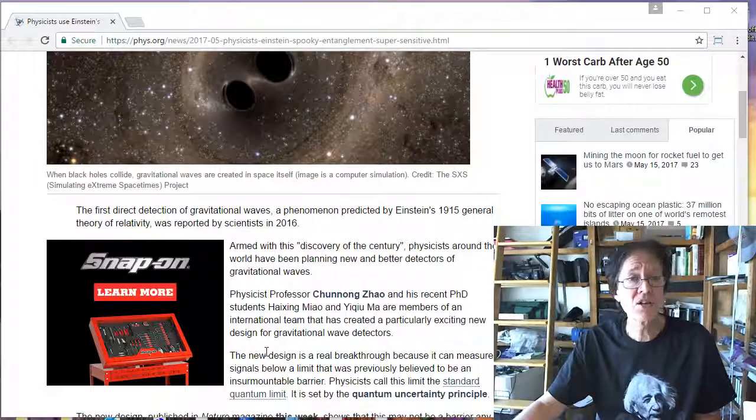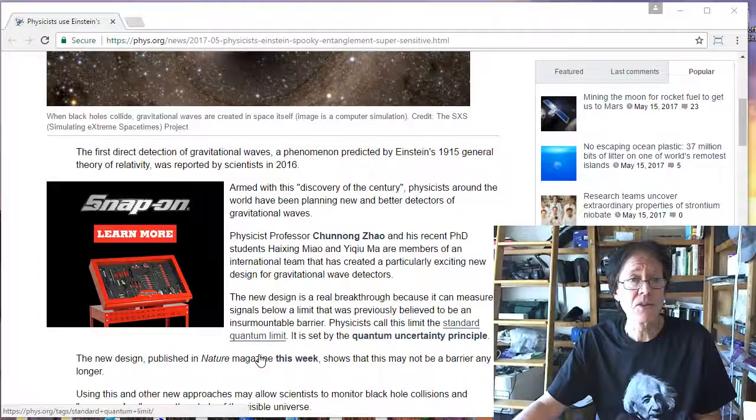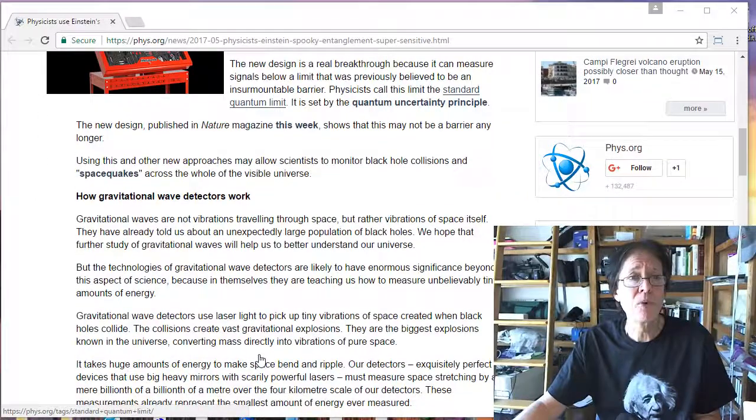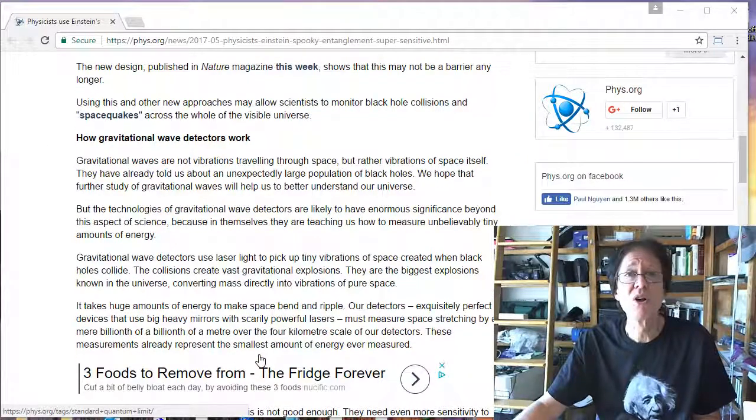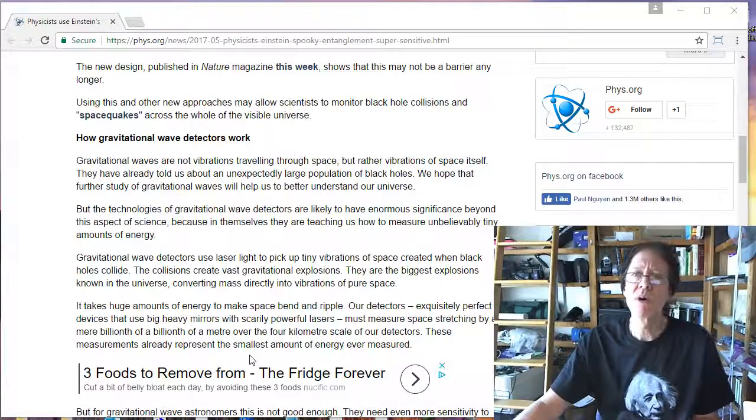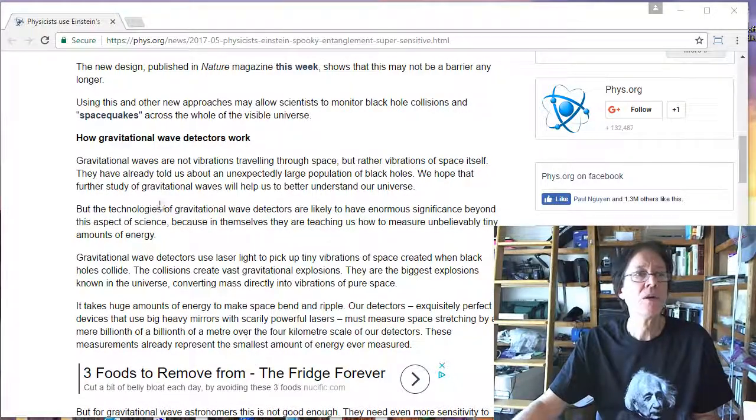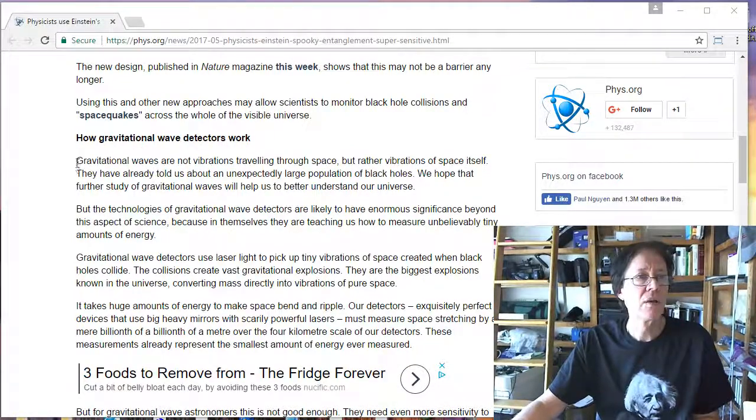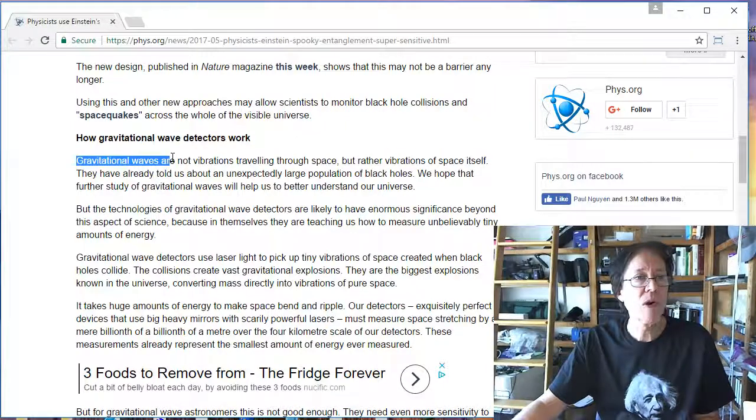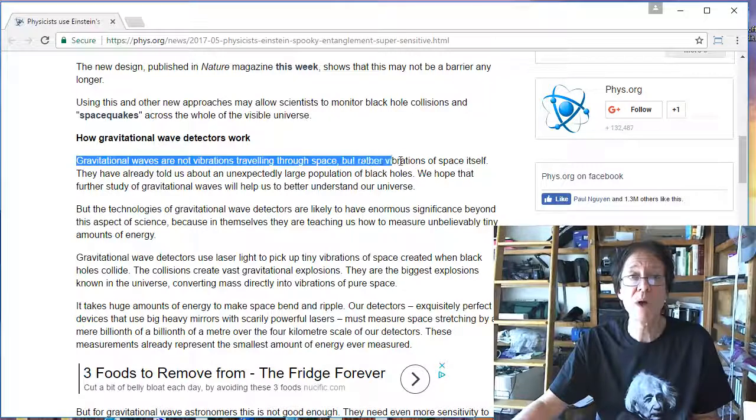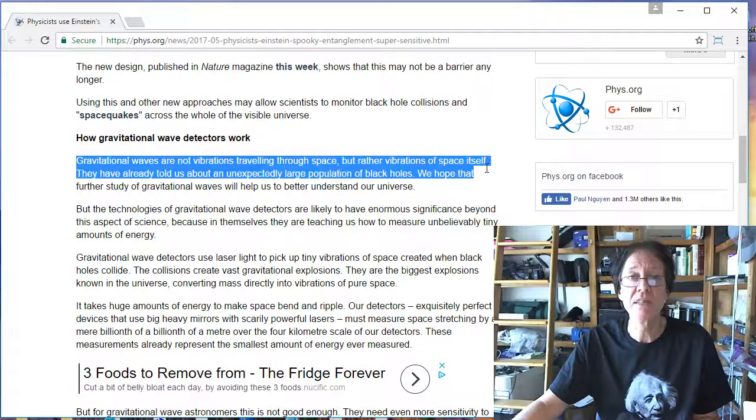So if we look at this article, I'm going to skip past a lot of this and get to a point where we have to start looking at some terminology in one of my least favorite terms. We're going to look at the sentence, how gravitational wave detectors work. Here we go. Gravitational waves are not vibrations traveling through space, but rather vibrations of space itself.